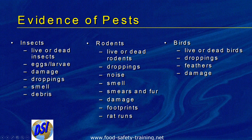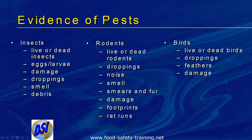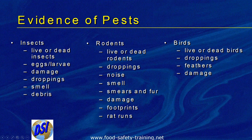For birds, look for feathers, nesting material, and perhaps shells from eggs. For insects, eggs or larvae could be another indication. So the ones that are different: eggs and larvae for insects; smears, fur, and rat runs for rodents; then feathers, nesting material, and eggshells for recognizing bird infestation.